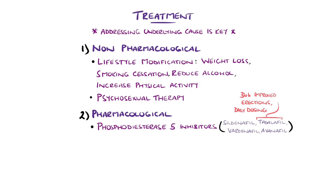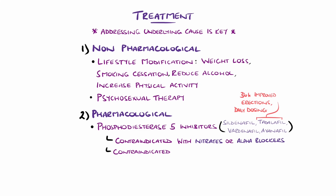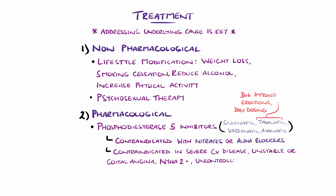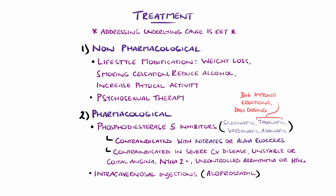Use of nitrates or alpha blockers are generally contraindicated due to the risk of severe hypotension. Other contraindications include severe cardiovascular disease, unstable angina or coital angina, as well as heart failure beyond the New York Heart Association classification stage 2, as well as uncontrolled arrhythmias or hypertension, amongst others. There is an option for intracavernosal injections of alprostadil, a prostaglandin E1 analogue, for those who do not respond to phosphodiesterase 5 inhibitors.